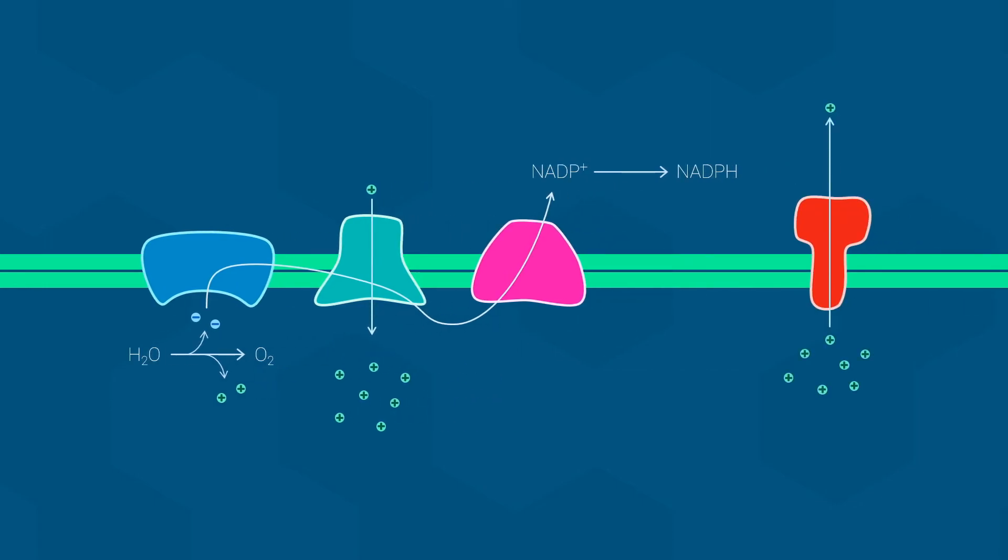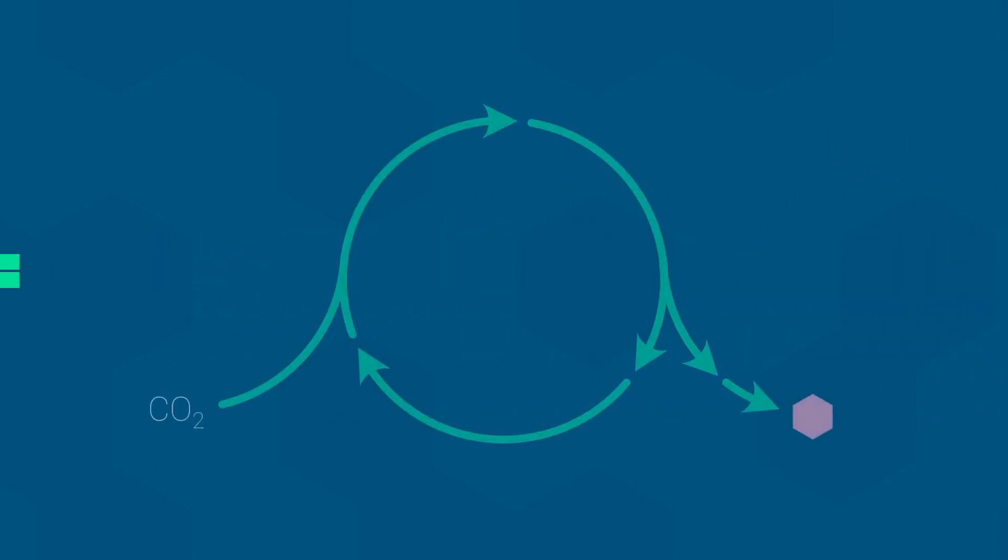The protons flow back across the membrane spontaneously, releasing energy as they go. ATP synthase harnesses this energy and uses it to drive the synthesis of ATP. So the net result of photophosphorylation is that light energy from the sun is converted into chemical energy in the form of ATP and NADPH.